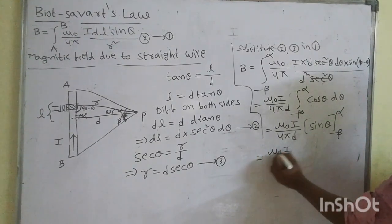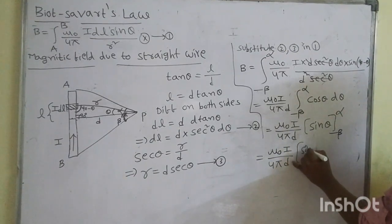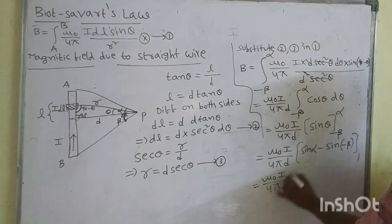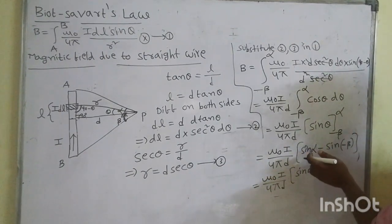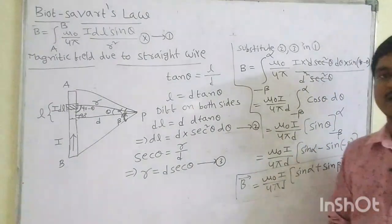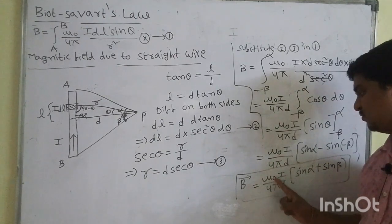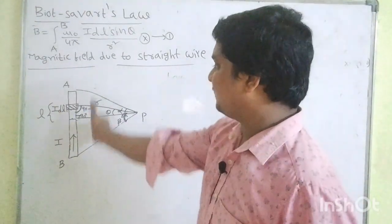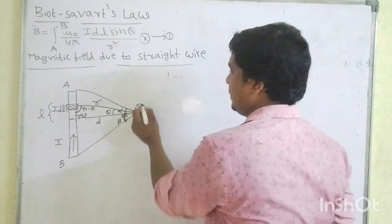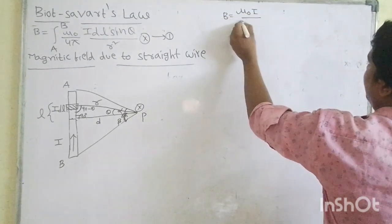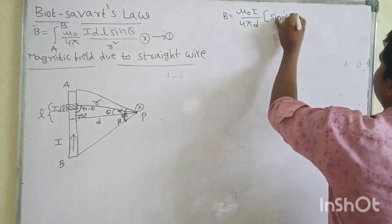Applying upper and lower limits: B = μ₀I/4πD · [sin α − sin(−β)] = μ₀I/4πD · [sin α + sin β]. This is the formula to find the magnetic field for a straight current carrying conductor: B = μ₀I/4πD · (sin α + sin β).